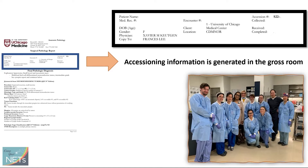Then we have other information about when the specimen was collected. And then most importantly, on the right side, we have an accession number. This is the number in our system that we give to the specimen. So if you ever have to request the slides or the blocks, you need to reference this number. Every hospital has its own way of writing this number. At University of Chicago, we use an S number — S for surgical pathology — followed by the year, meaning the specimen was received in 2022, and then followed by a unique sequential numeric number given to that specimen.